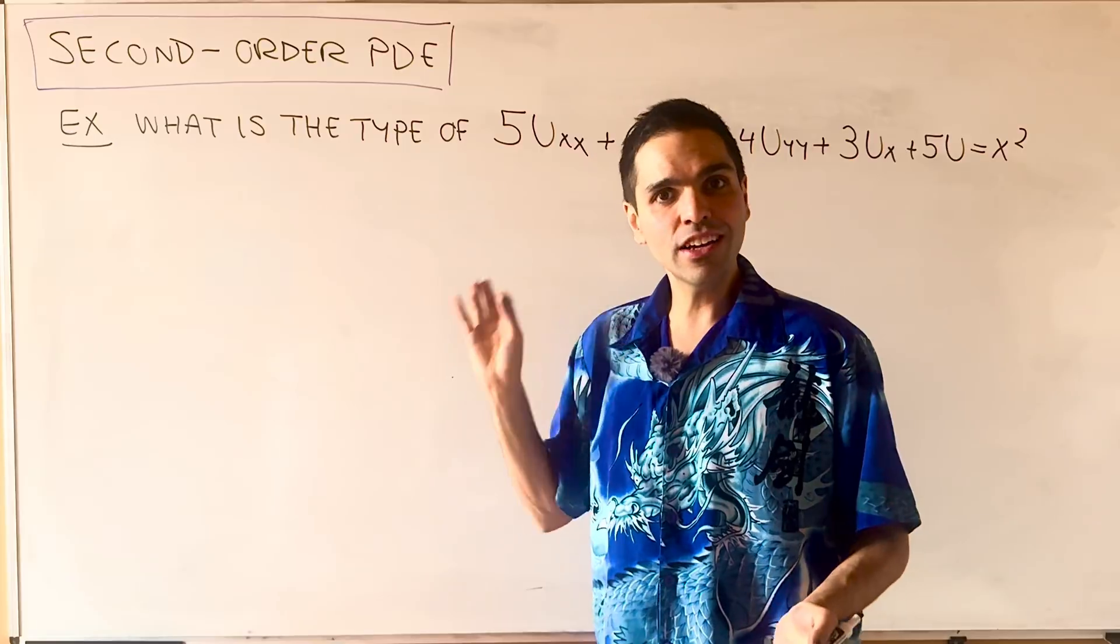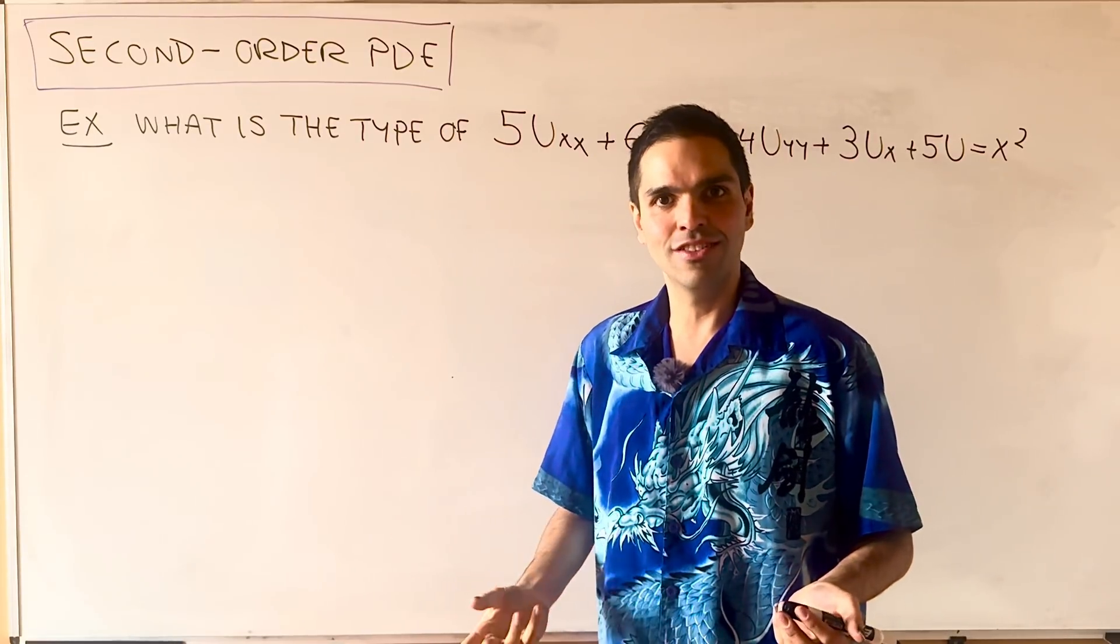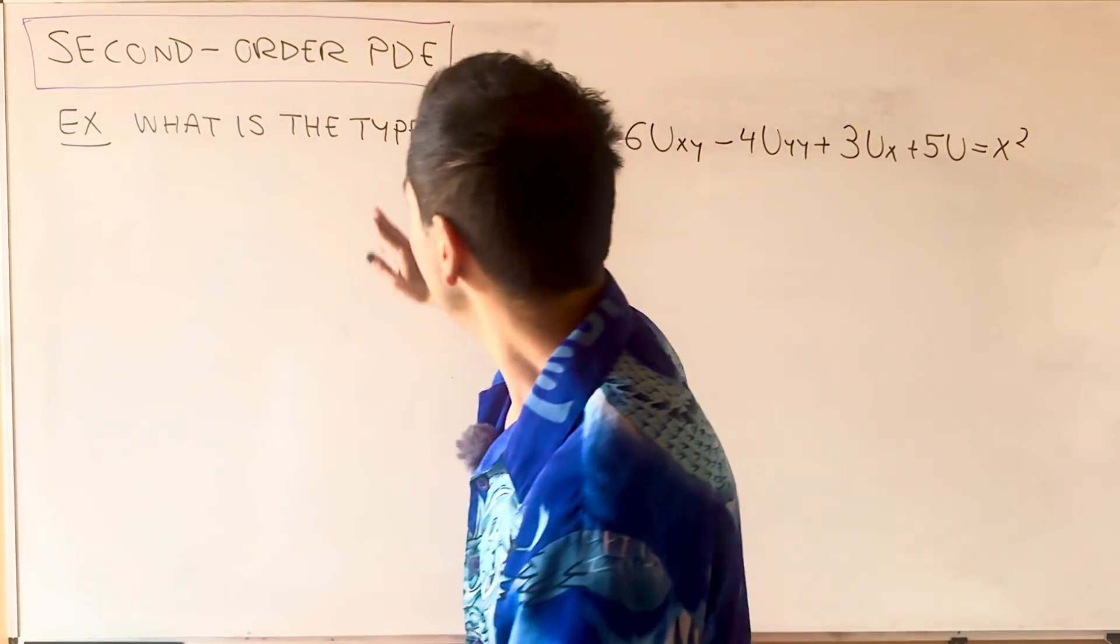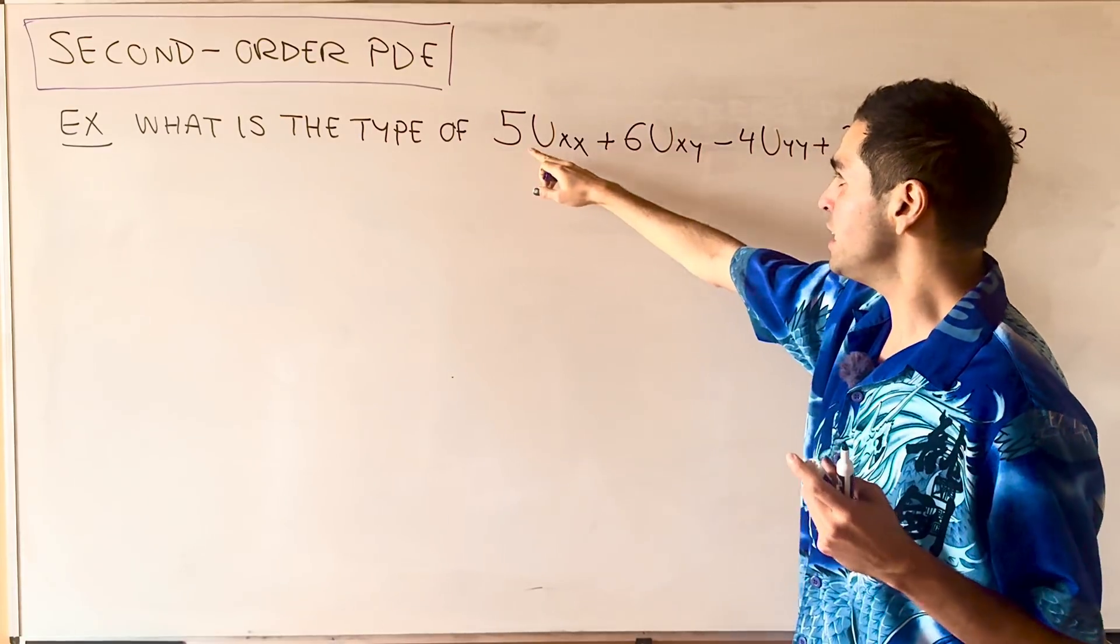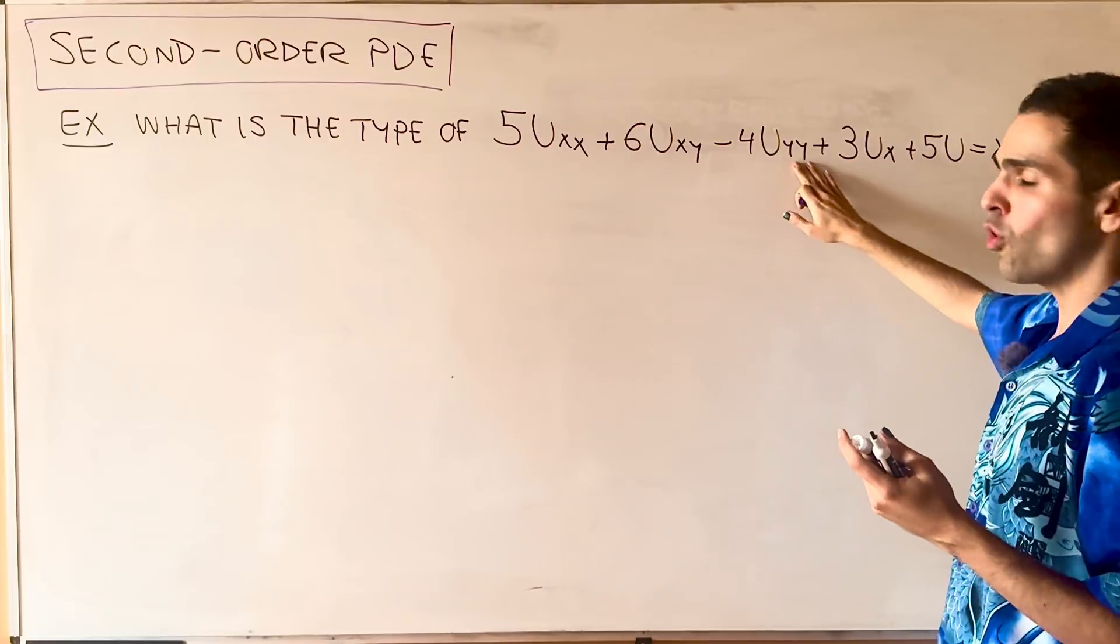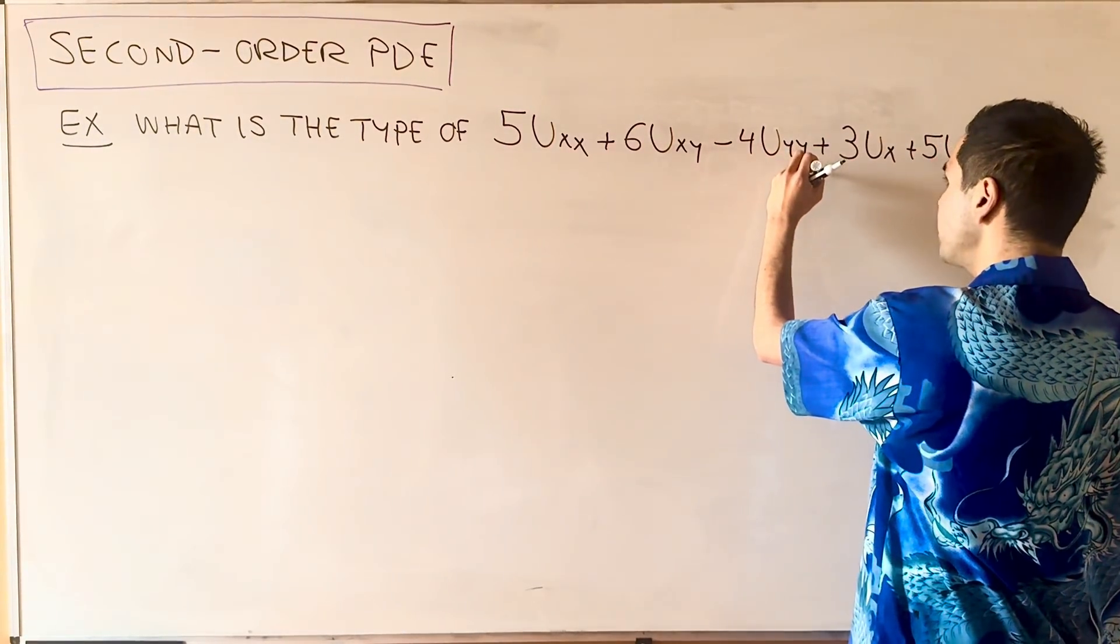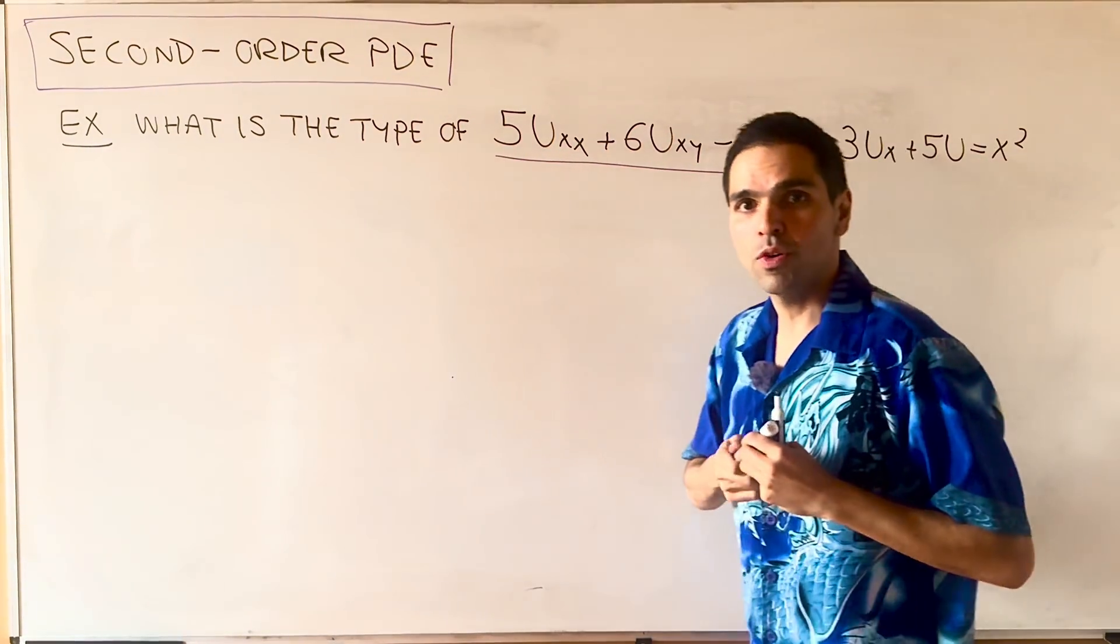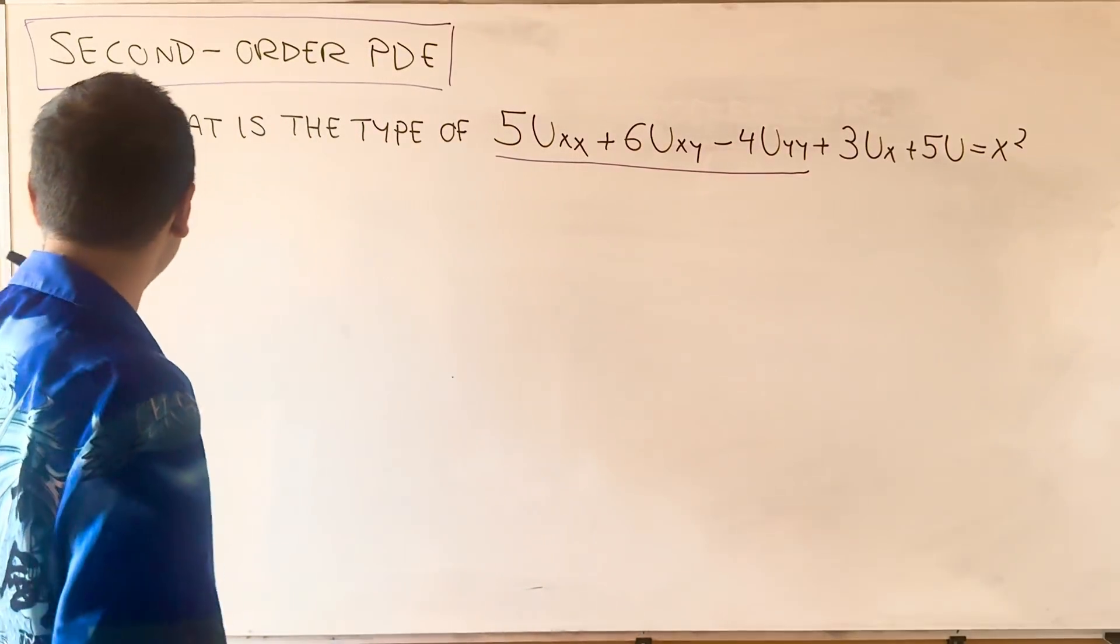However, specifically for second-order PDEs, we have a more refined classification, which is what we'll talk about today. In particular, let's try to find the type of the second-order PDE: 5U_XX plus 6U_XY minus 4U_YY plus other terms. We just need to focus on the second-order terms themselves, because we now have the following definition.